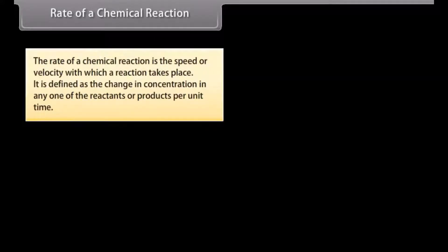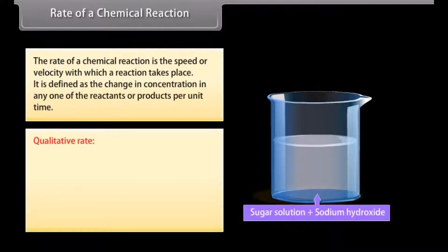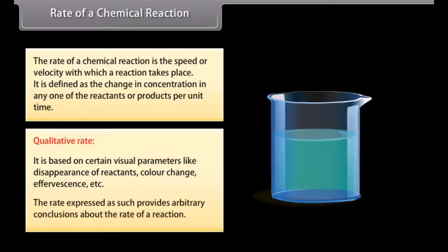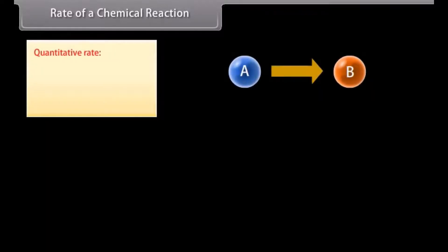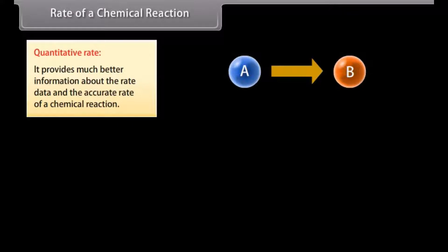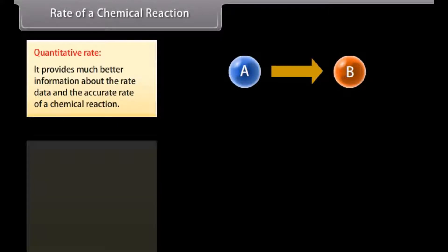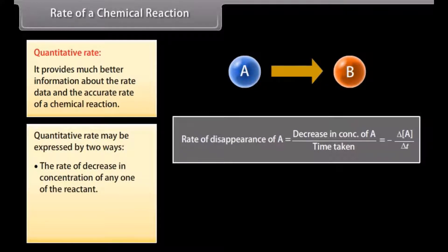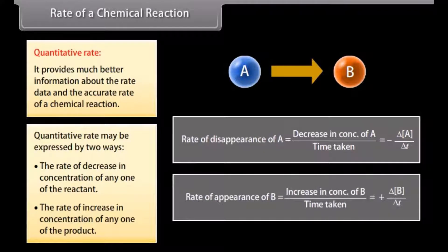Rate of a chemical reaction. The rate of a chemical reaction is the speed or velocity with which a reaction takes place. It is defined as the change in concentration of any one of the reactants or products per unit time. It can be expressed by two ways: qualitative rate, based on visual parameters like disappearance of reactants, colour change, effervescence, etc.; and quantitative rate, which provides much better information about the rate data. Quantitative rate may be expressed as the rate of decrease in concentration of any one of the reactants, or the rate of increase in concentration of any one of the products.